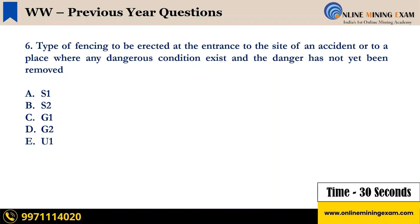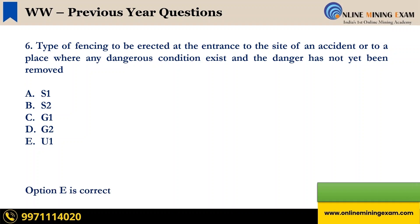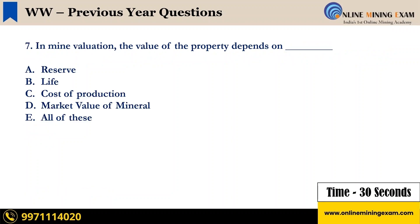Type of fencing to be erected at the entrance to the site of an accident, or to a place where any dangerous condition exists and the danger has not yet been removed: A) S1, B) S2, C) G1, D) G2, E) U1. Your time starts now. Time up. The correct answer is E, U1. Next question.